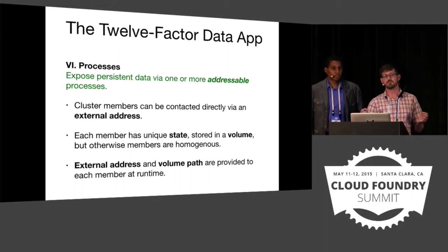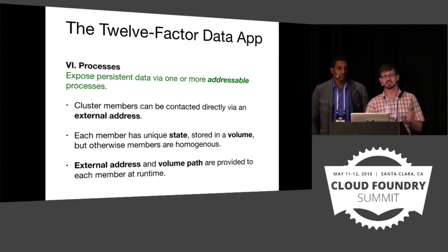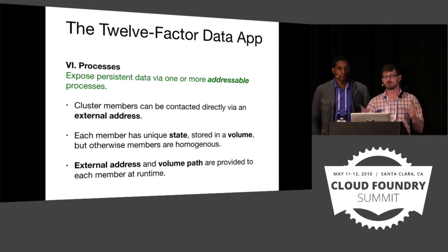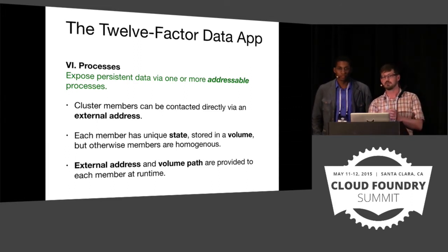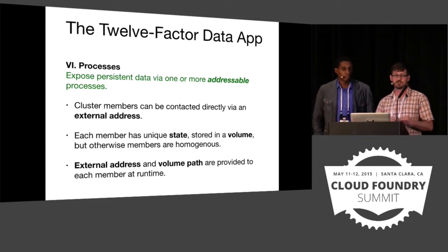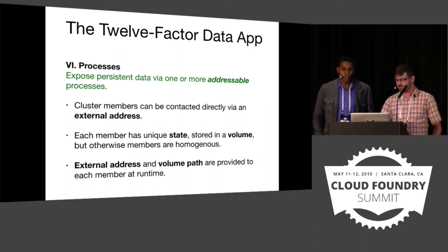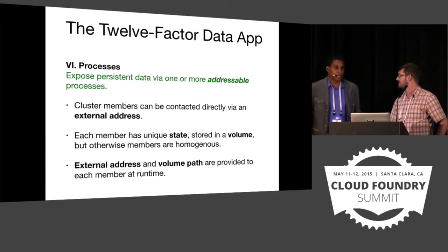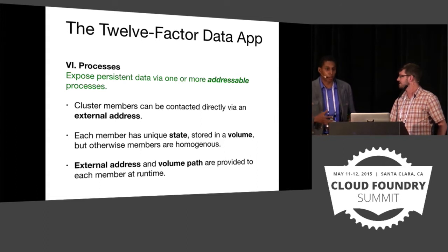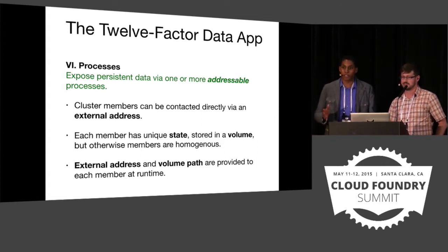For example, if you have an application with data nodes and a service discovery or cluster manager node, you would deploy that as two applications. One application would be all your homogenous data nodes; the other would be the service broker or cluster manager application, which again would be homogenous. This is where individual addressability really comes into play — stitching these clusters together via whatever orchestration is right for that particular data service.